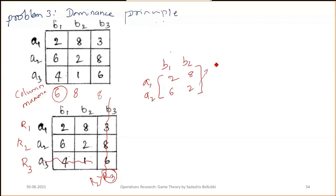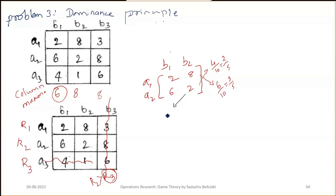Solving by the algebraic or analytical method: the differences are 4 and 6, total 10, giving p1 = 2/5 and p2 = 3/5. For q1 and q2, the differences are 6 and 4, giving q1 = 3/5 and q2 = 2/5.